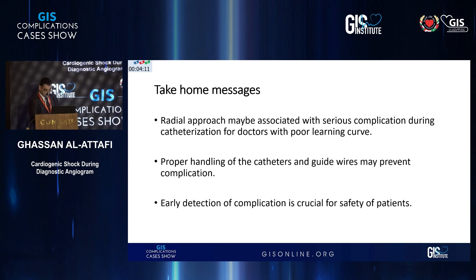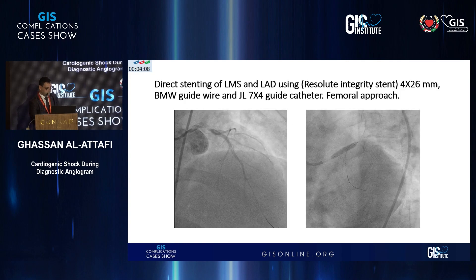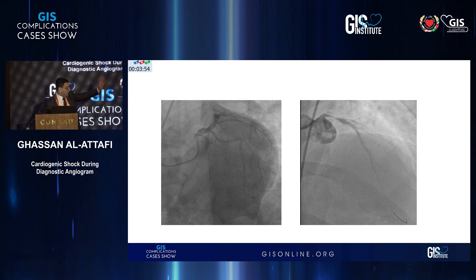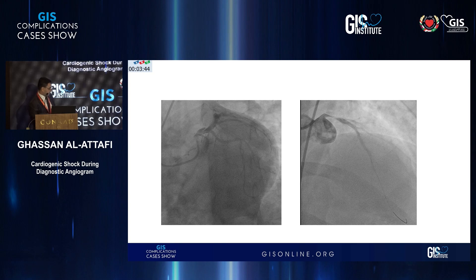Can you go back to when the patient had the second event and you took him back? Was the access radial or femoral for the intervention? The operator confirmed he switched to femoral access for the intervention. The image on the right is the femoral approach — the diagnostic image was the radial one. So once the patient had the problem, he went femoral.